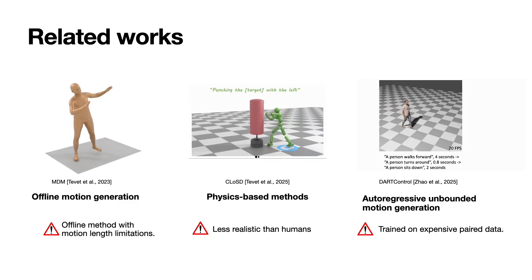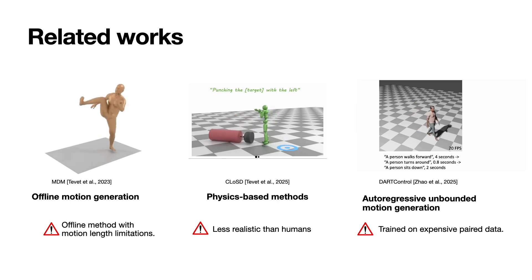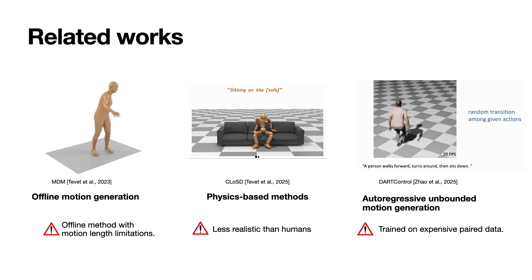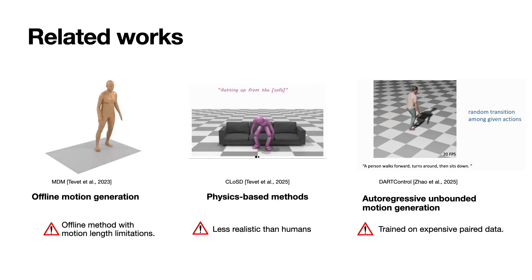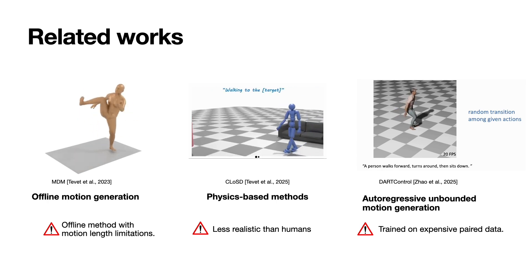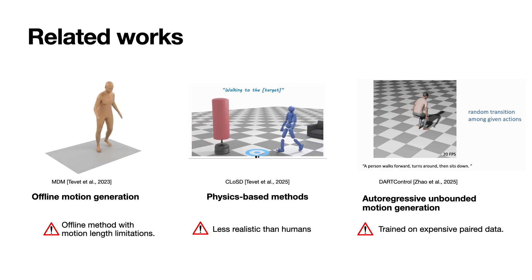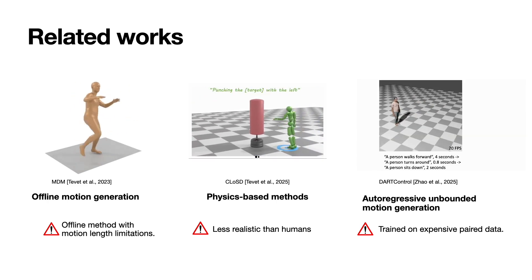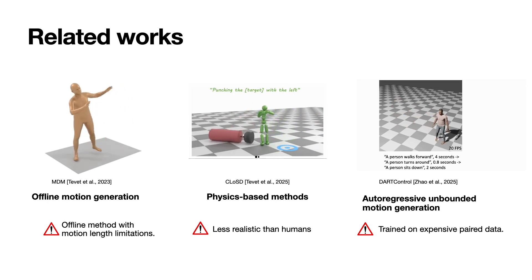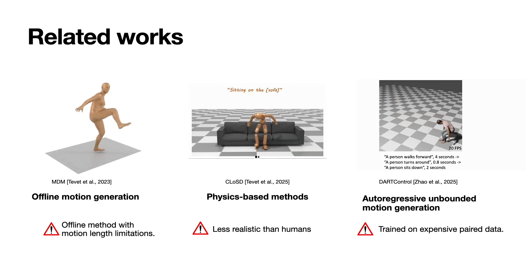Autoregressive models that can generate unbounded motions in 3D space have potential to be a motor system for an interactive avatar. These models are normally trained with paired data, which is limited and expensive to collect in practice. Also, a model trained for a specific task can be difficult to adapt to novel tasks.